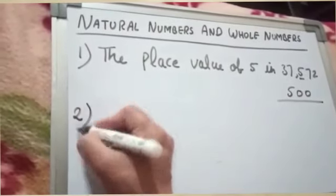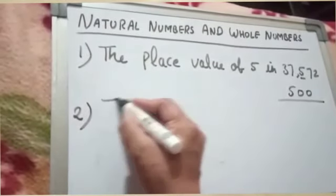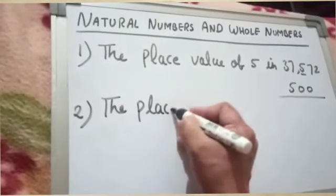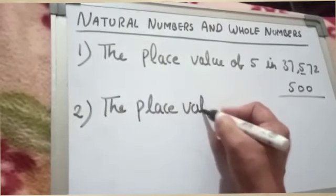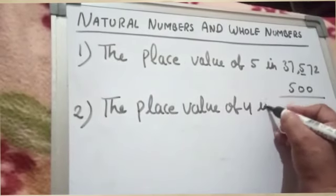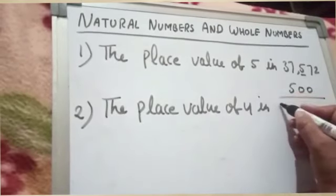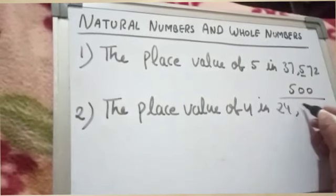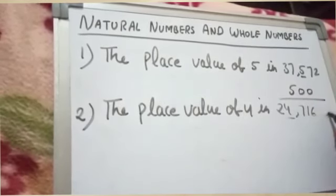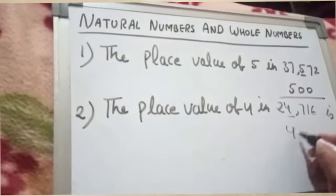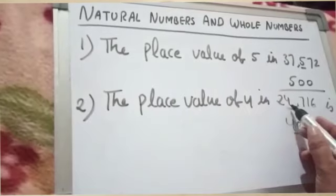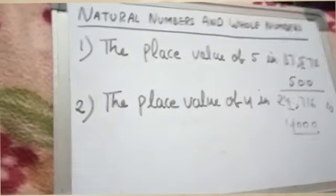Now we take another example. The place value of 4 in the number 24,716 is 4,000, because 4 lies at the 1,000th place.